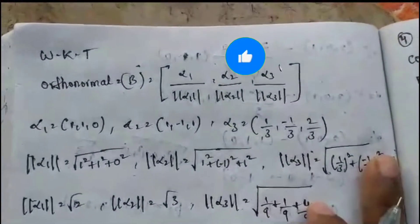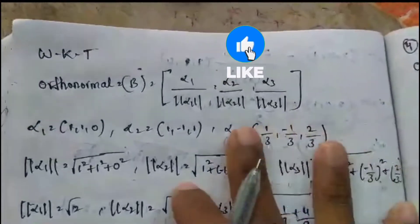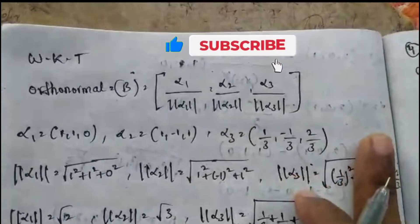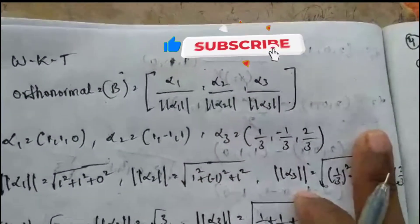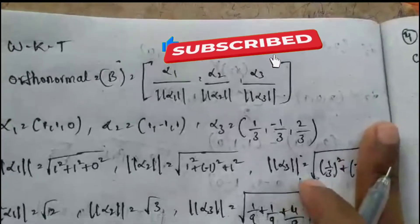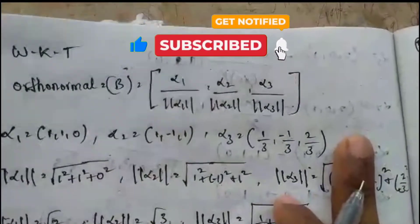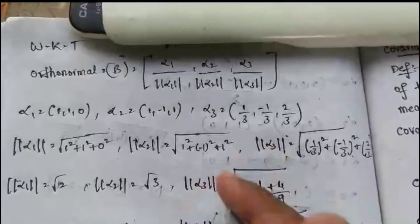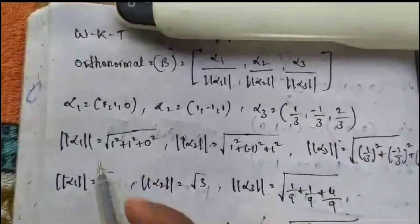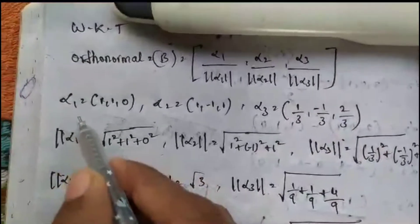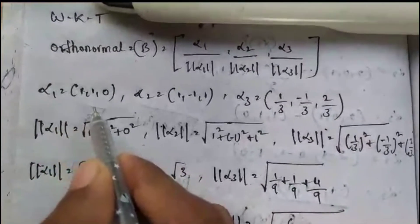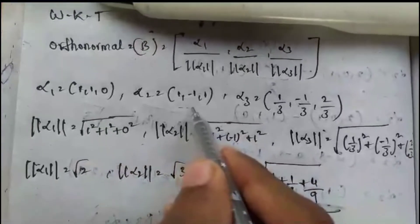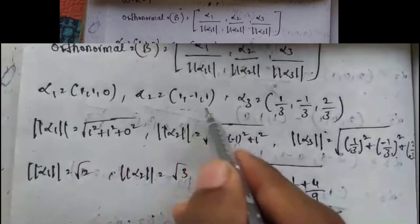Now we know the α1, α2, and α3 values. The orthonormal basis B equals α1/|α1|, α2/|α2|, α3/|α3|. Here α1 = (1, 1, 0), α2 = (1, −1, 1), and α3 = (−1/3, 1/3, 2/3).